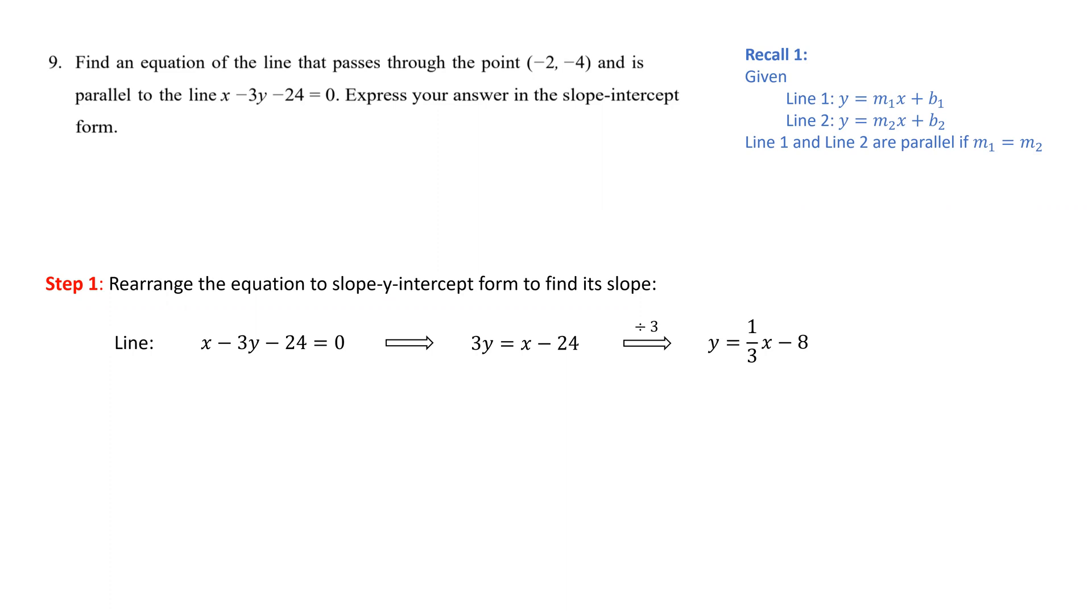The numerical coefficient of x is the slope of the given line. Therefore, since the two lines are parallel, the slope of the line we're looking for will be one-third as well.